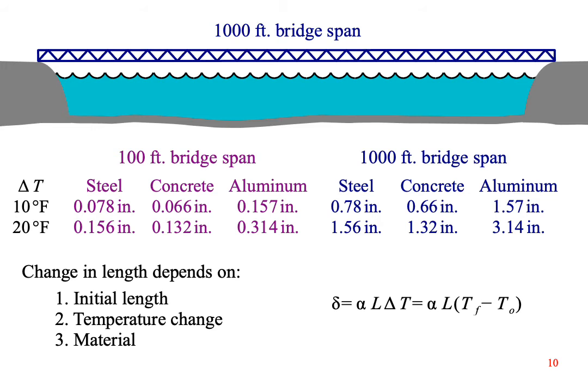We can boil this down into a single equation, where lowercase delta is the amount of thermal expansion. Lowercase alpha is the thermal expansion coefficient, which you can find in Appendix B for different materials. L is the initial length, and delta T is the change in temperature. Anytime you have a change in a number, calculate it as the final value minus the initial value. If the temperature drops, then the final temperature will be below the initial temperature, and delta T will be negative. This means that the change in length is also negative, which means you have shrinkage instead of expansion.